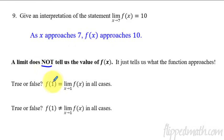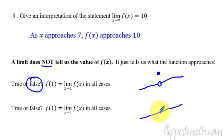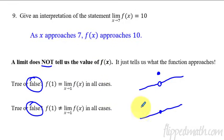True or false: f of 1 is equivalent to the limit as x approaches 1 of f of x in all cases. Is that true? No, that's false. An example would be if there's an open circle and the function keeps going — as we get to the limit, the y value is something else. And this one — f of 1 does not equal the limit in all cases — is also false. It's possible that f of 1 could equal the limit, but it's not always true. That's a possibility, but not guaranteed.